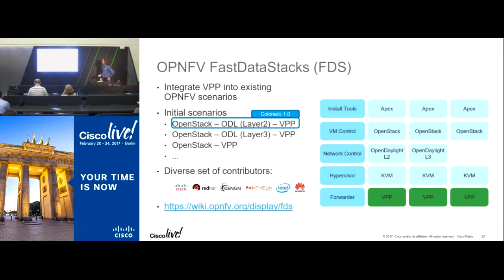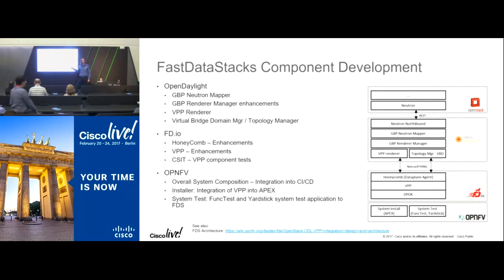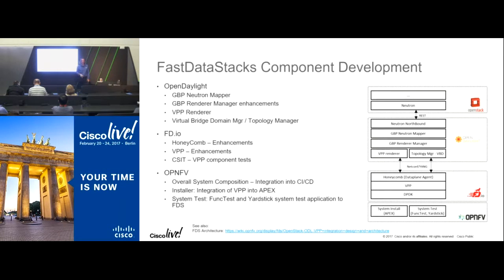Pulling that off was a major effort involving many people. We had to do substantial additional work in OpenDaylight. Group Based Policy was already there — the ACI equivalent in OpenDaylight — but what was missing was the ability for GBP to talk southbound to the Honeycomb data plane agent and VPP. We had to build a new renderer to translate the generic policy model — 'I can talk to you, you can't talk to me' — into VPP-specific language. That piece of code we built from scratch.